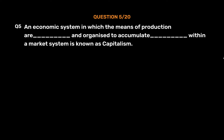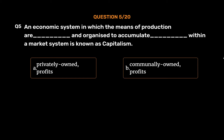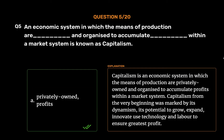Question 5: An economic system in which the means of production are _____ and organized to accumulate _____ within a market system is known as capitalism. Options: A. Privately owned, Profits; B. Communally owned, Profits; C. Distributed, Losses; D. Privately owned, Land. The correct answer is Option A: Privately owned, Profits. Capitalism is an economic system marked by dynamism, growth, expansion, and use of technology and labor to ensure greatest profit.